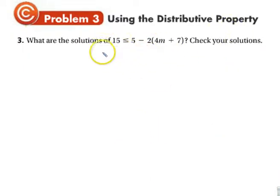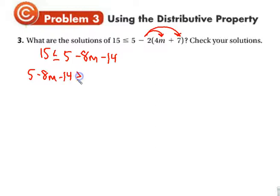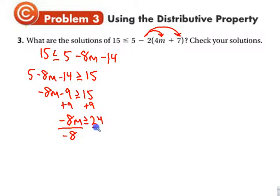Using the distributive property. So 15 less than or equal to 5 minus 2 times the quantity 4m plus 7. I distribute this negative 2 to everything inside. I'm going to flip this around. Combine like terms. Add 9 to both sides. Divide by negative 8. Flip the inequality.